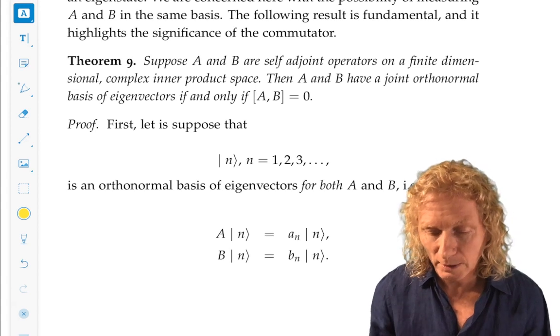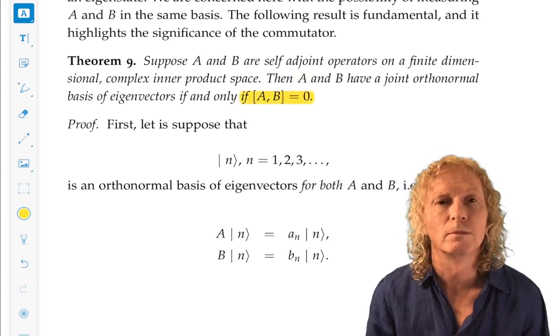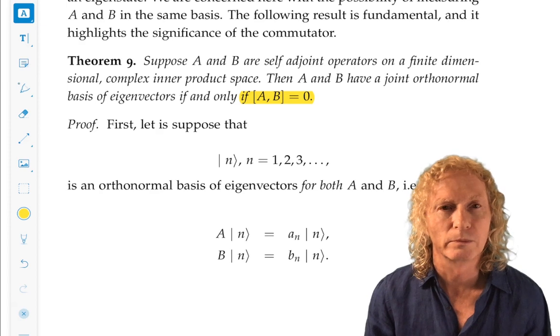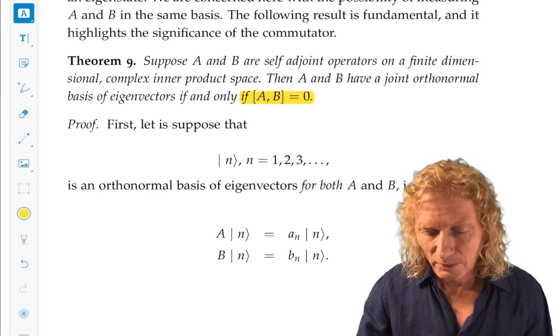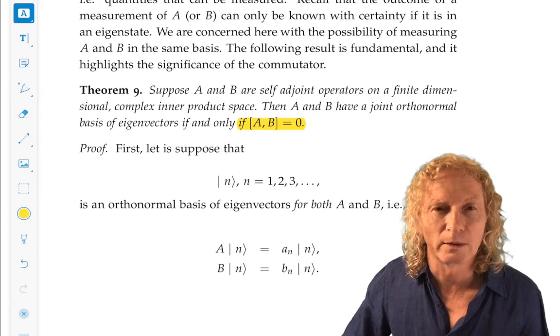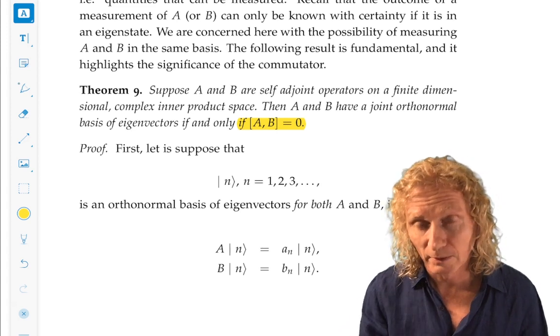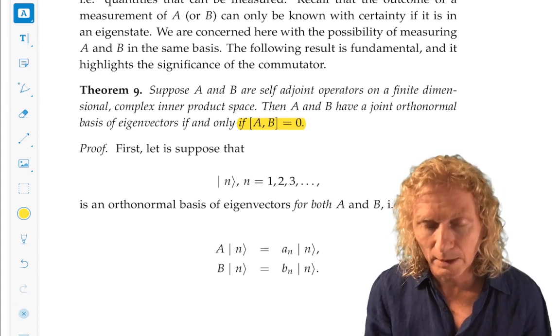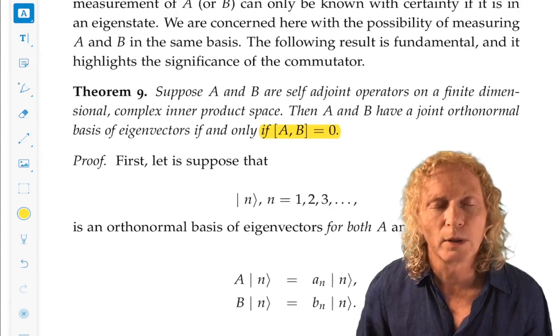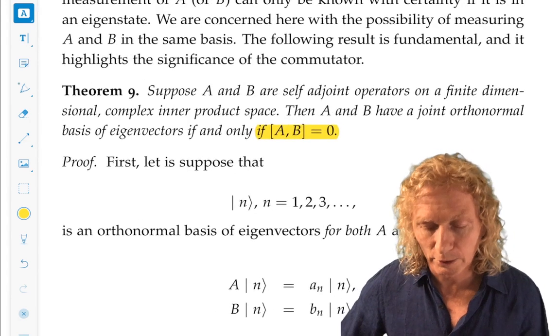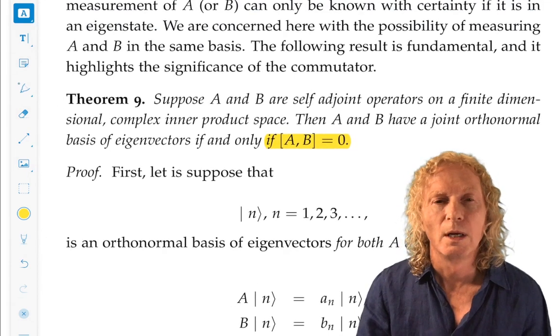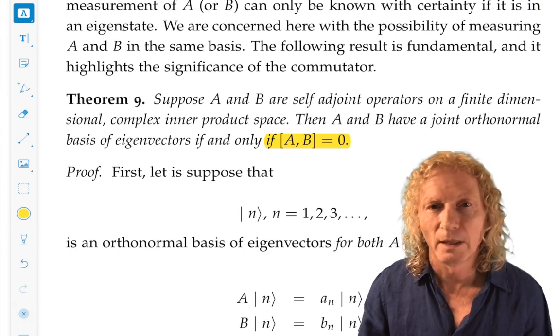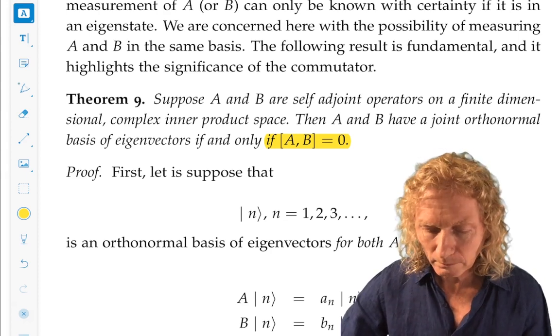And the necessary and sufficient condition is for those two operators to commute. And we saw the commutator in the last section. So that's something that's easy to determine. Thinking back to the last lecture, X and P do not have a common set of orthonormal basis of eigenvectors. But other observables may. And this is going to play a big role when we study angular momentum in the final chapter. Now, just because a set of eigenvectors is common to both A and B, that doesn't mean they have the same eigenvalues.